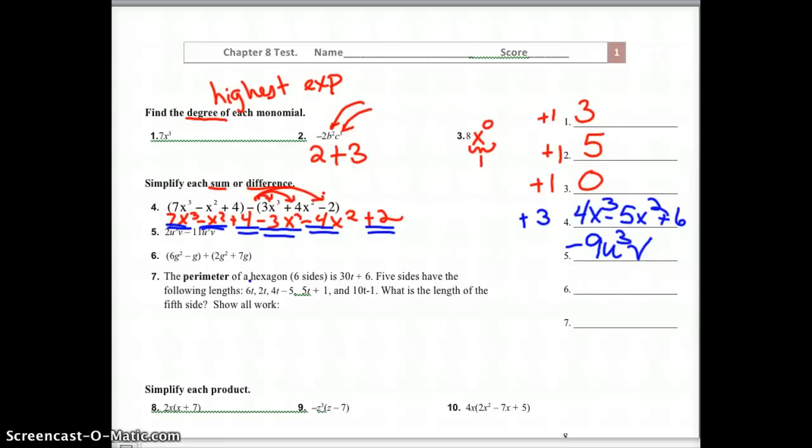For number 7, we've got a hexagon. You should draw one. 6 sides. And they tell you that the perimeter is 30t plus 6. Important for these word problems for you to organize everything. 5 sides have the following length. Well, let's go label them. We've got 6t. We've got 2t. We've got 4t. I didn't see the minus 5 on that. So I'm going to erase this right here. This one, we've got 4t minus 5.